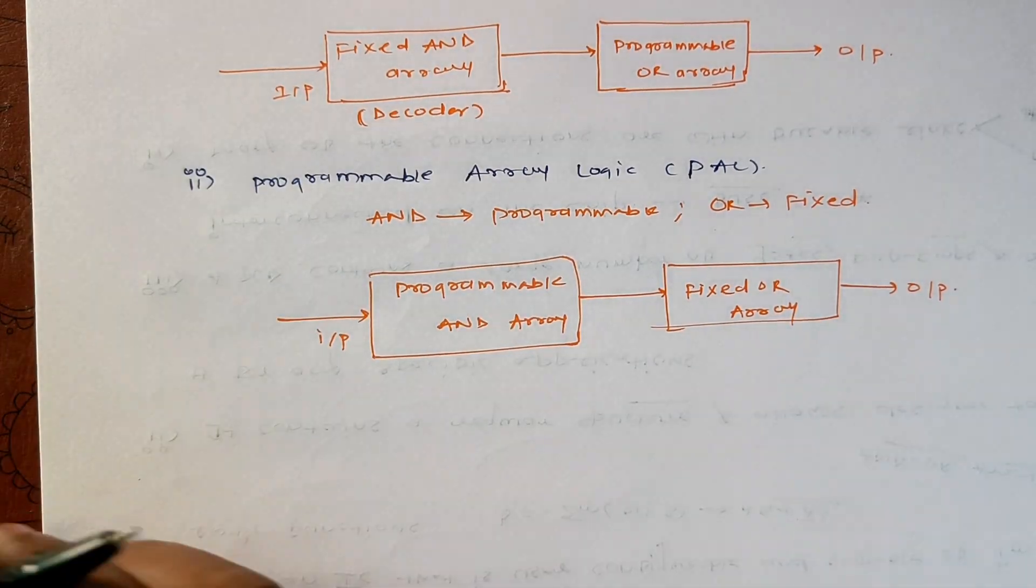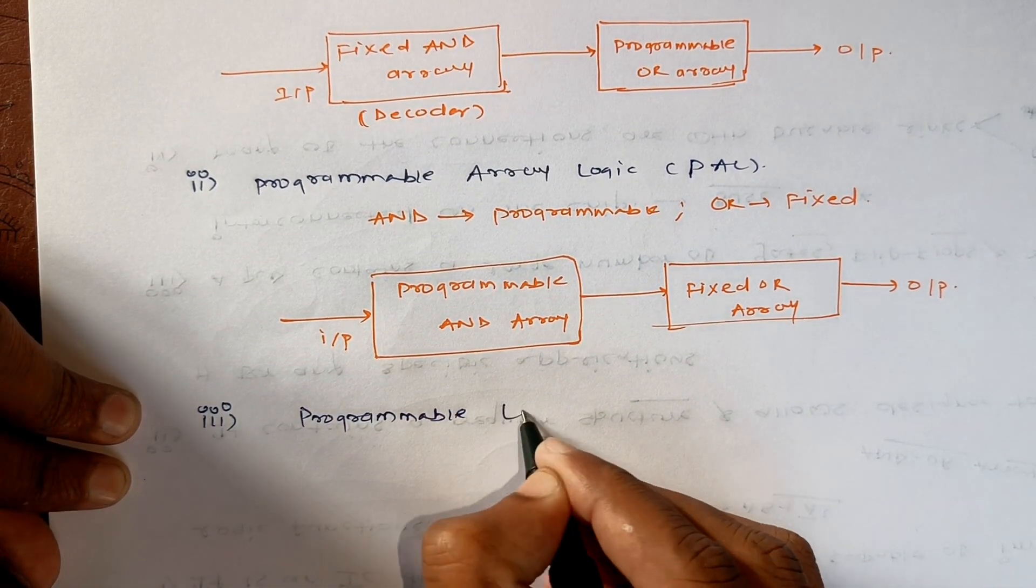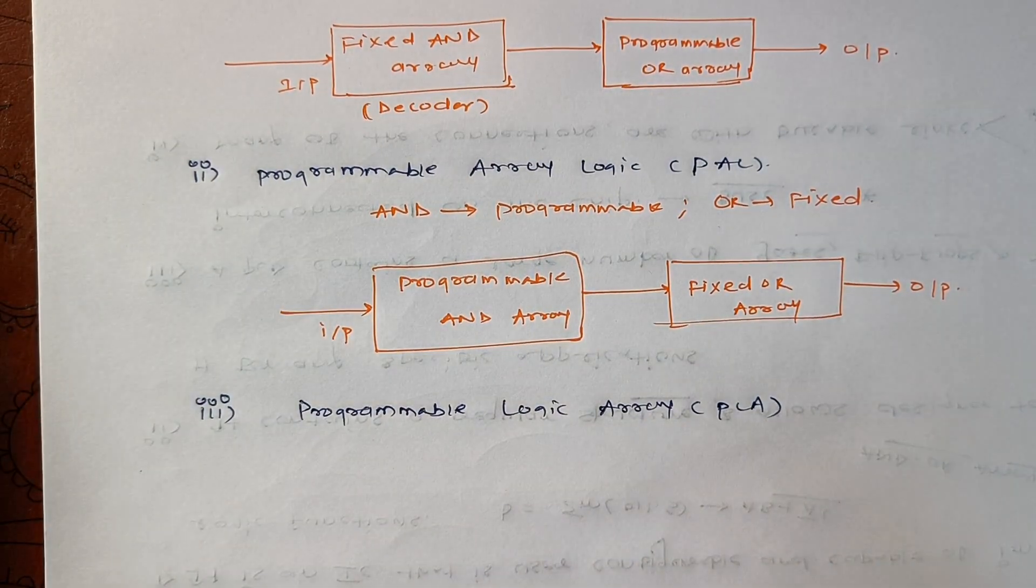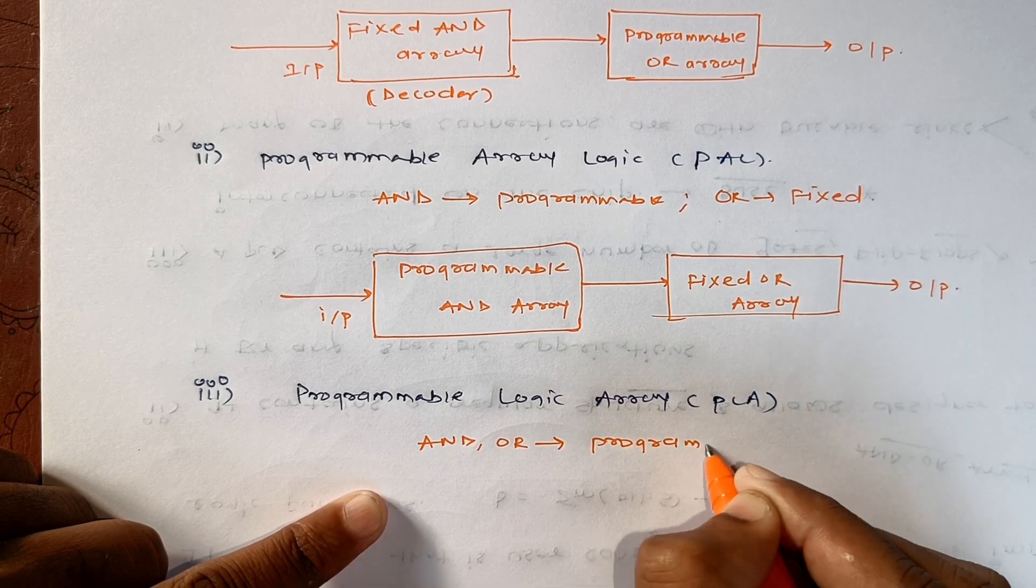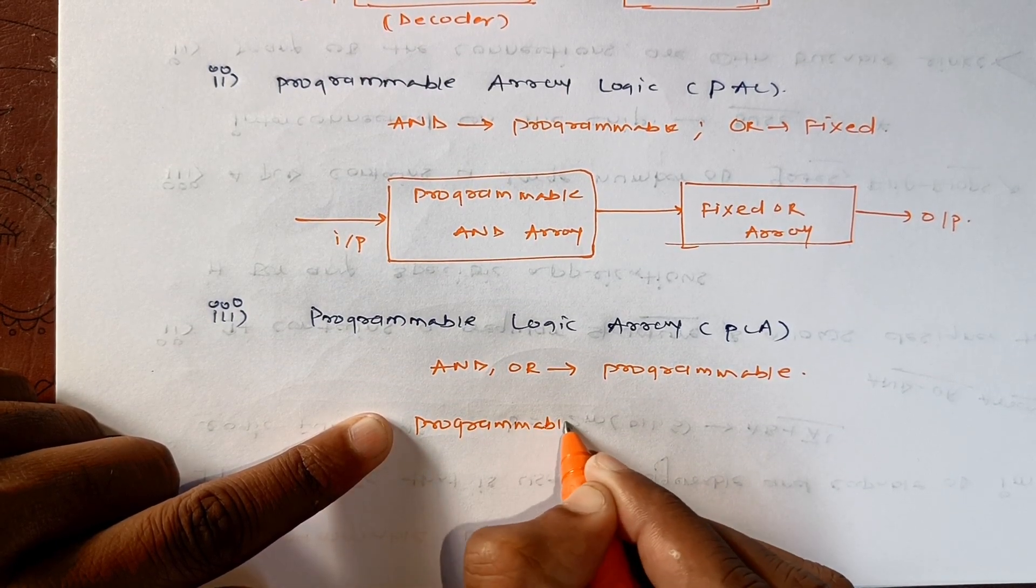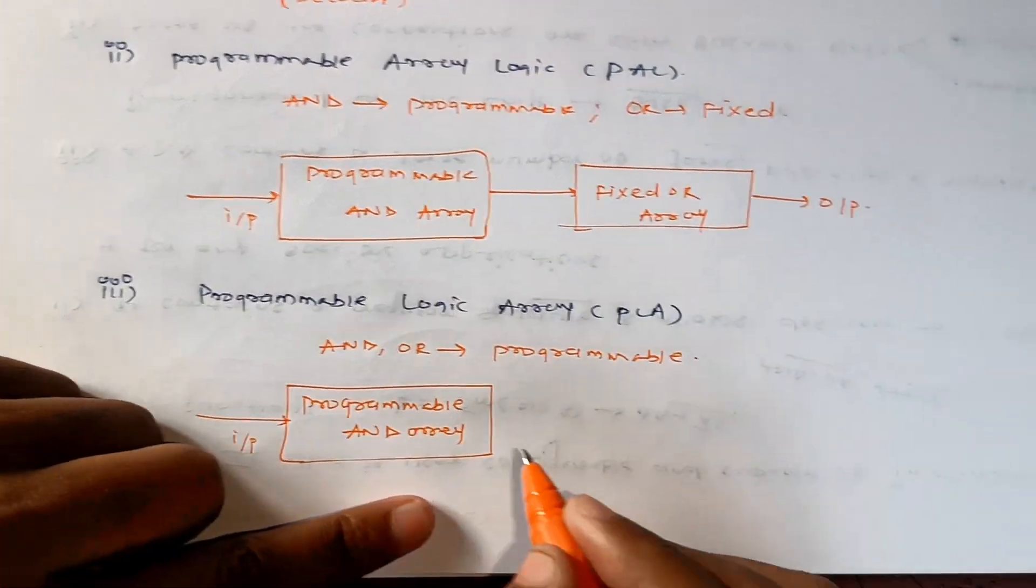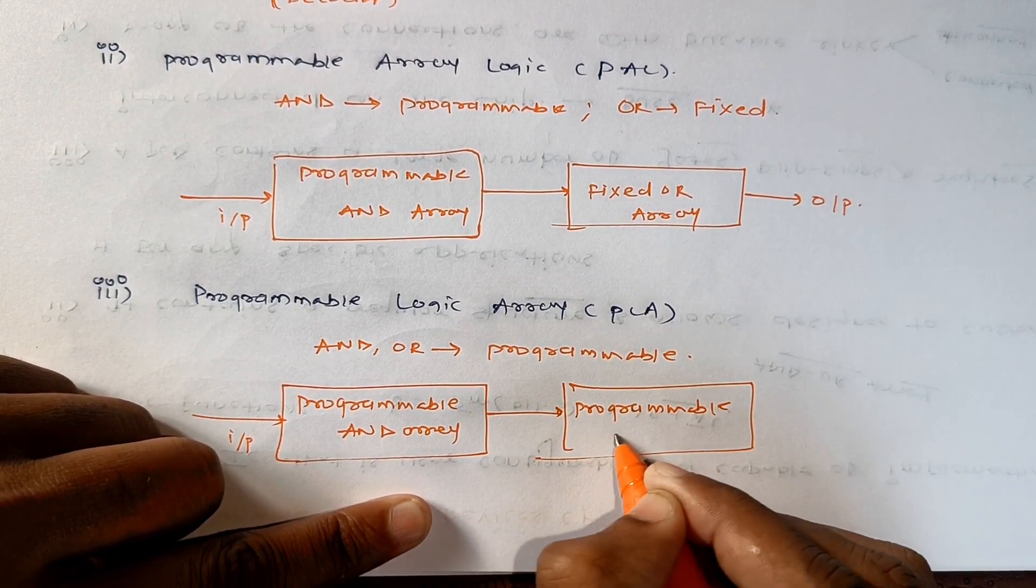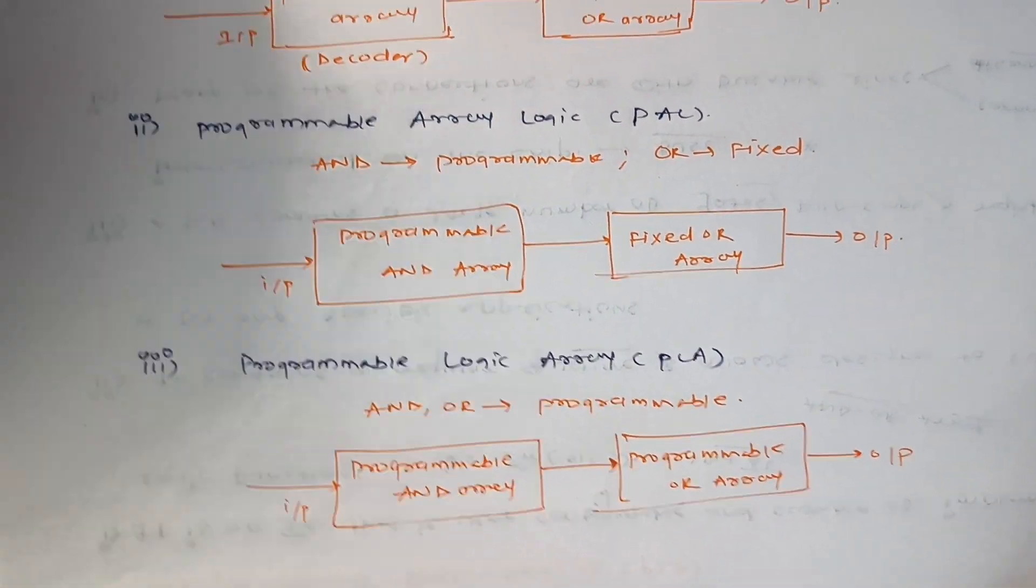Last and the third one we will call programmable logic array, that is PLA. What is PLA? It is a type of PLD in which both AND gate and OR gate are programmable. That means both are programmable. So we can write we have programmable AND array and we have again programmable OR array. So this will be the schematic for programmable logic array.